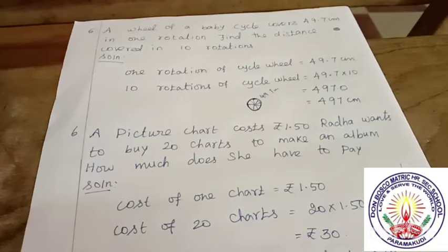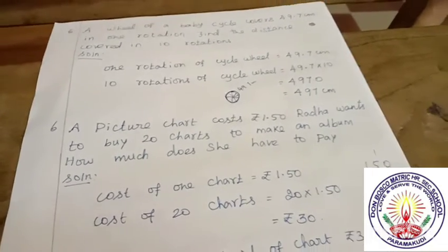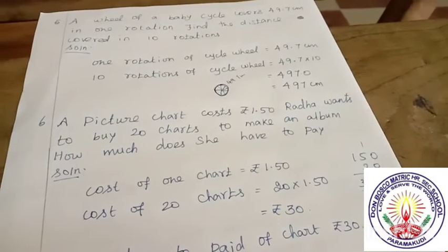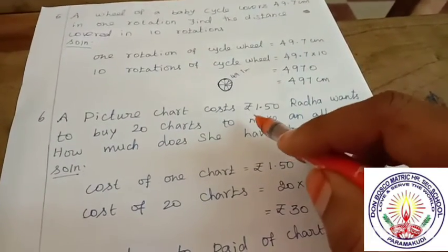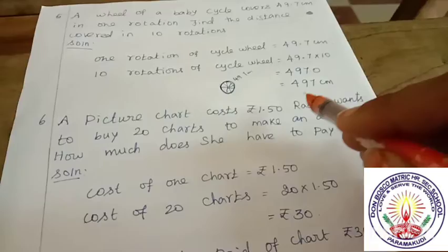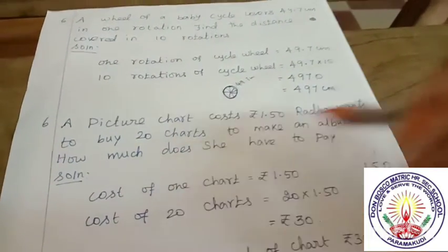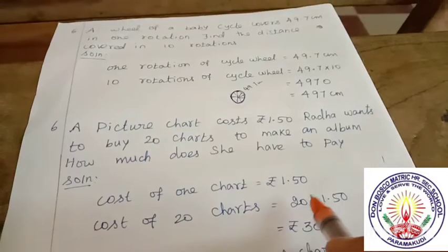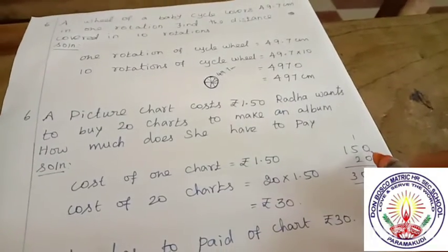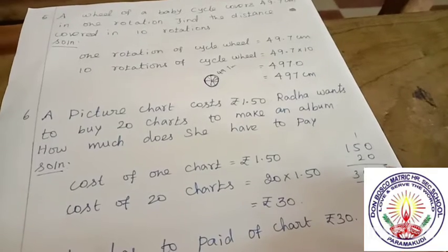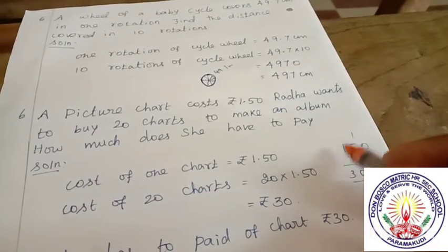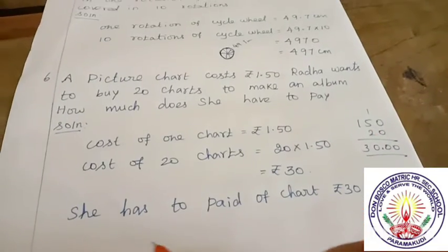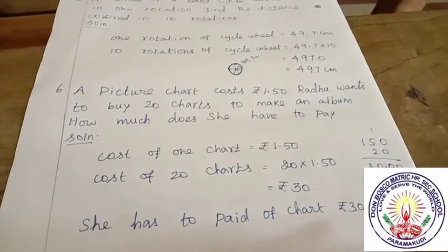Sixth question: A picture chart costs 1.50 rupees. Radha wants to buy 20 charts to make an album. How much does she have to pay? Cost of 1 chart is 1.50 rupees. Cost of 20 charts: 20 into 1.50. How many zeros? 1, 2. Put it last right to zero. 5 twos are 10, balance 1. 1 two is 2, 2 plus 1 is 3. So 30 rupees. She has to pay 30 rupees.